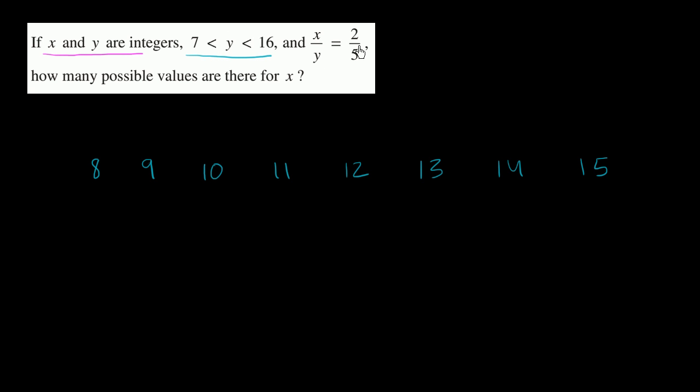Now they're saying x over y is equal to 2 fifths. Let me just rewrite that. So they're saying x over y is equal to 2 fifths. Or if you multiply both sides by y, you get x is equal to 2 over 5 y.